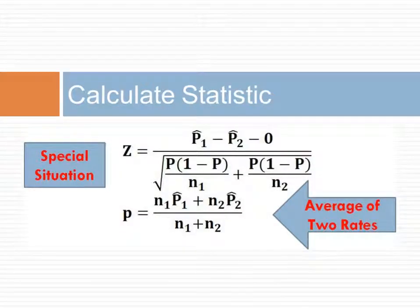Consider the special situation where we want to test if the two population rates are equal. In this situation, the calculation of the test statistic is easier. We replace the null value with zero, and the standard error is calculated from the average of the two sample rates. Keep in mind that the distribution of the test statistic is always examined as though the null hypothesis is true — in this case, that the two population rates are the same.